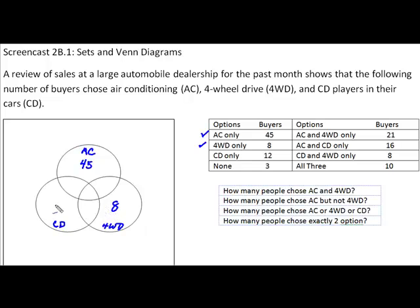For the CD option, there were 12 that chose just that and not air conditioning or four-wheel drive, so that 12 belongs over here. And then those people that wanted none of those options are going to be outside of the three circles completely — we enter those 3 people up here, and they really could go anywhere in that square outside.